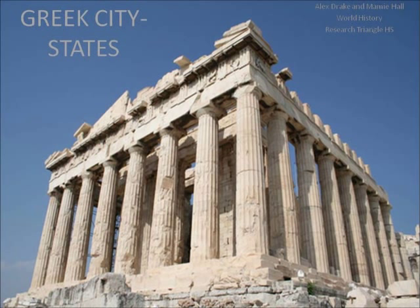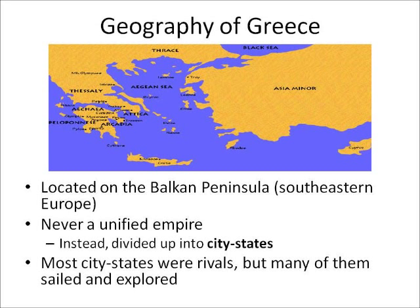First, to review the geography a little bit — you should have already done a map activity, but we'll talk about this just to set the stage. Greece is located on the Balkan Peninsula, which is in southeastern Europe. It's up against the Mediterranean Sea, east of Italy, located near Asia Minor, and if you go further east, you'd be in the Middle East, or what we studied earlier as Mesopotamia.